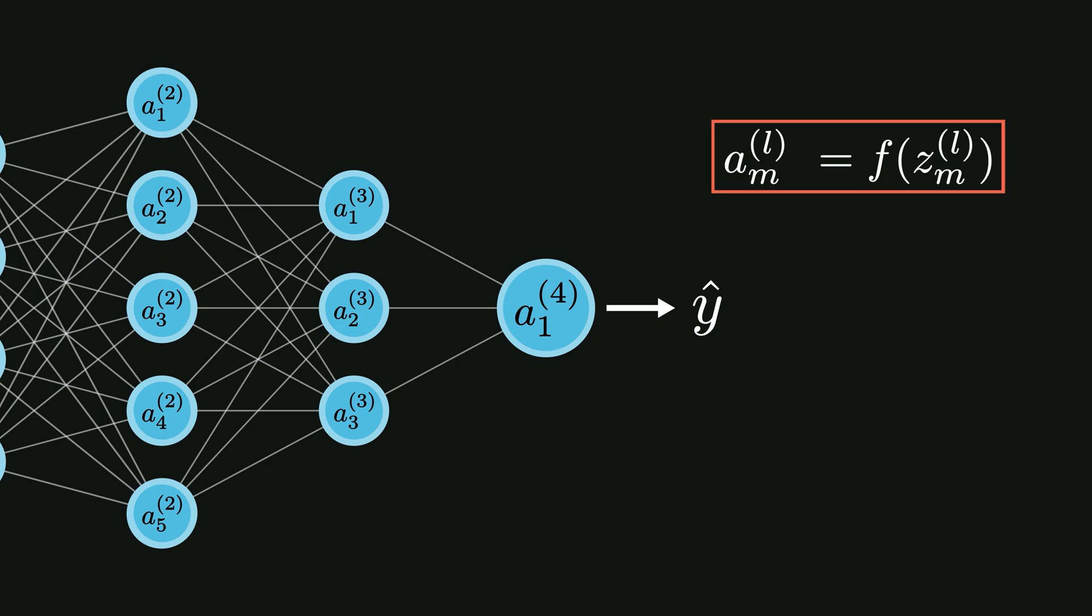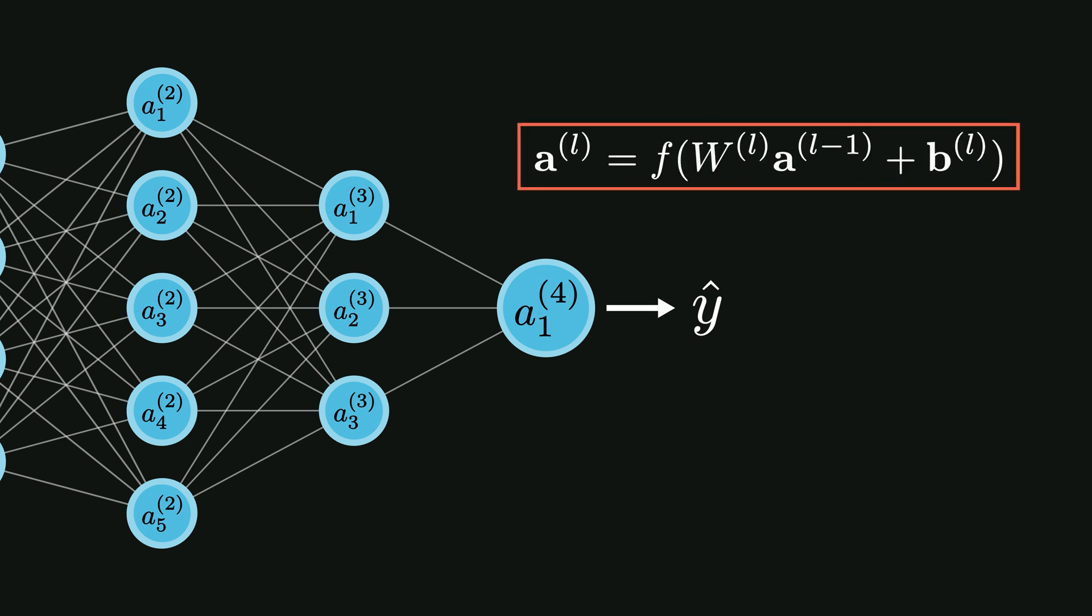Al is the activation function obtained by passing the term z from the previous layer through the activation function f. Here, z is the weighted sum of inputs from the previous layer plus the bias term. The prediction from the output neuron is y hat.